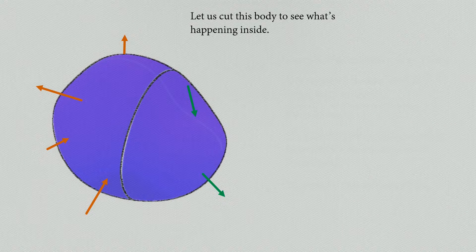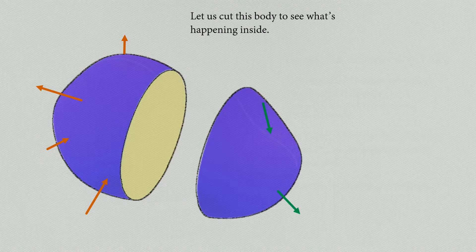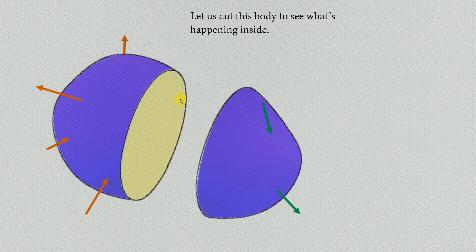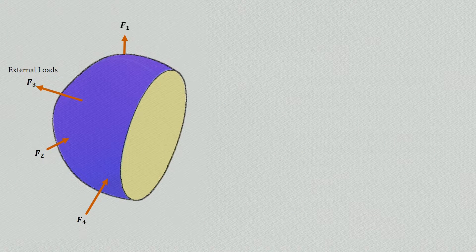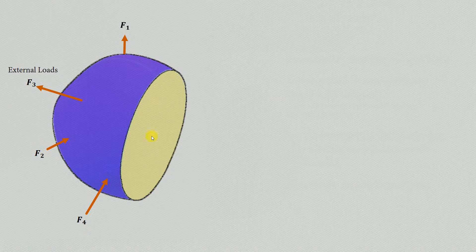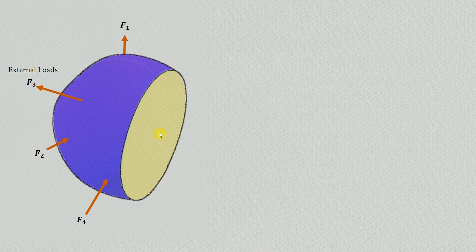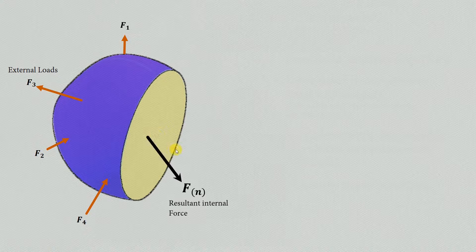To understand what's happening inside this body, let us cut it into two halves. We call one the left part and the other the right part. Let us focus on the left part. Since the complete body was in equilibrium, this section should also be in equilibrium. We'll call this a cut surface because it is generated after cutting. The net force on this cut surface should equal the net force acting on the outer surface of this body. Let's call this internal force acting in opposition as Fn.